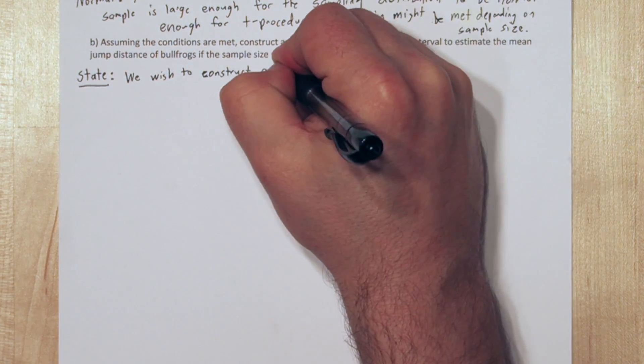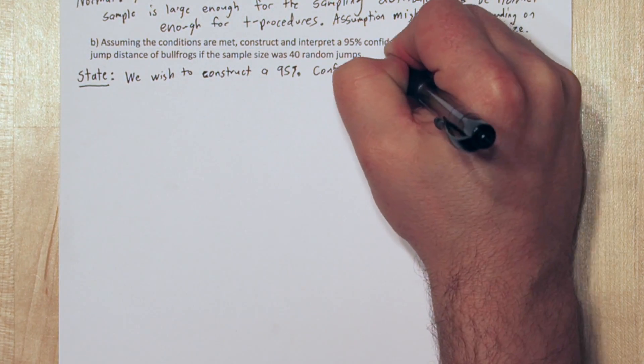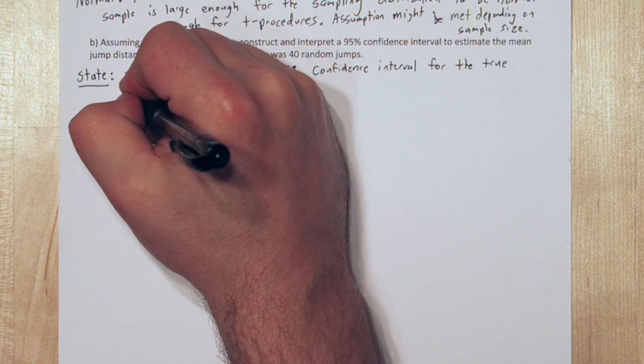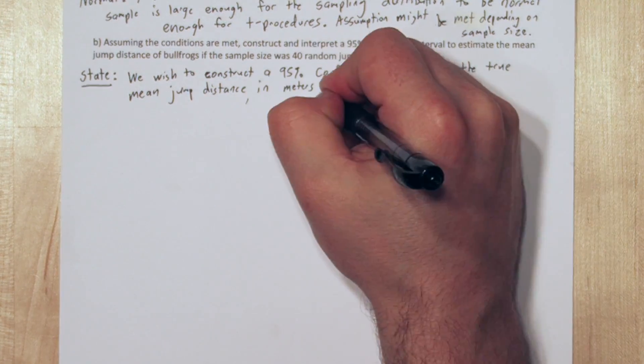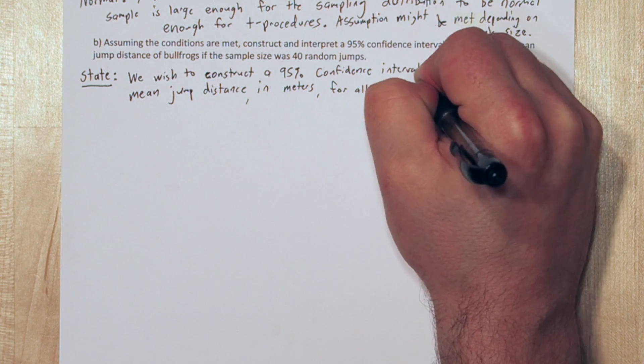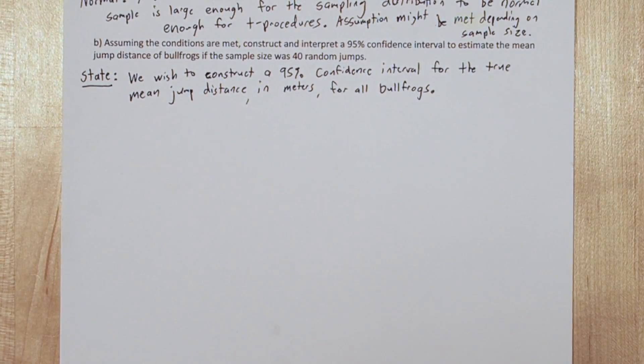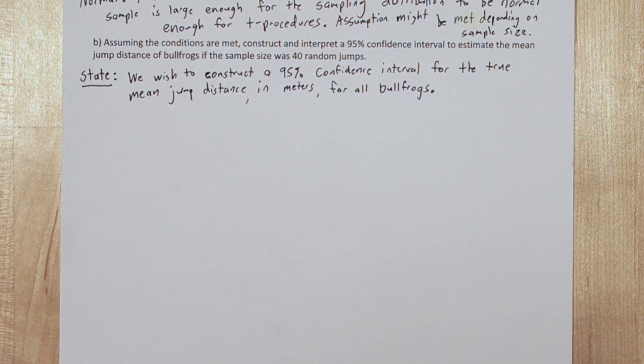So state. We wish to construct a 95% confidence interval for the true mean jump distance in meters for all bullfrogs. Notice a state step has our confidence level and also our parameter of interest that we want to estimate.